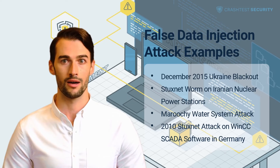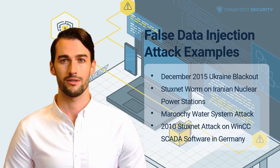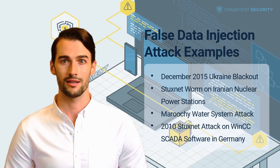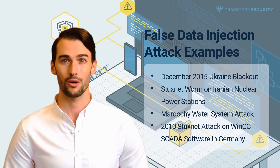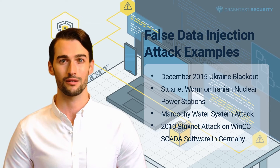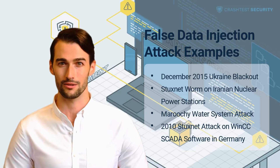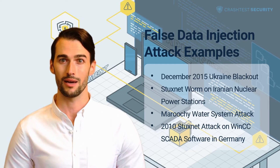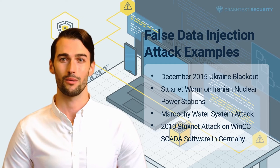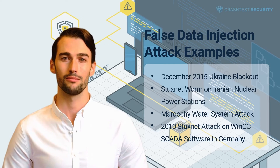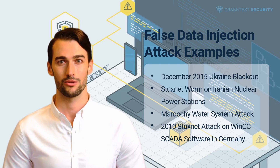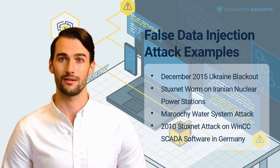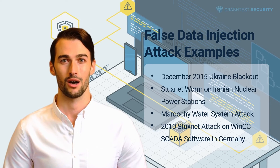The Stuxnet worm targeted programmable logic controllers used to automate industrial processes and power systems. The worm has been under development since the mid-2000s and usually targets computers that use Windows OS and run the Siemens Step 7 real-time data transmission software. As part of the planned attack, attackers planted the worm on Iranian critical infrastructure management centers, collected real-time data from industrial systems, and caused uranium gas centrifuges to spin out of control, causing maximum damage to the entire power grid.